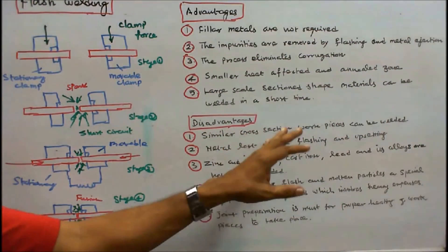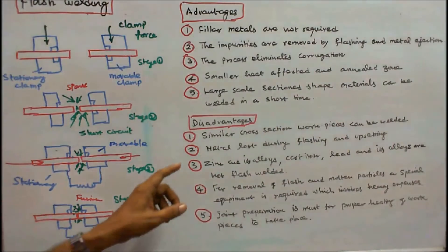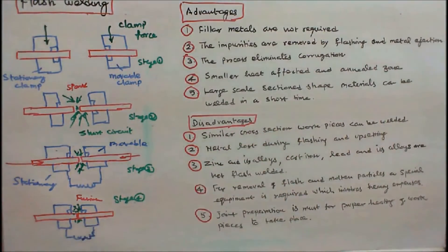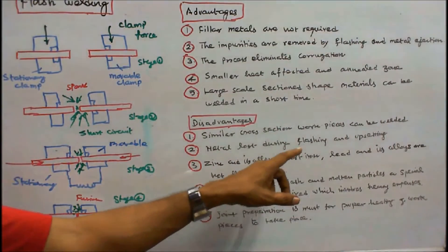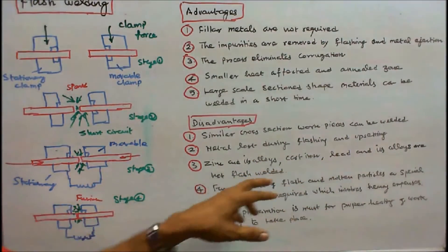1. Similar cross section workpieces can be welded. 2. Metal lost during flashing and upsetting. 3. Zinc and its alloys, cast iron, lead and its alloys are not flash welded.